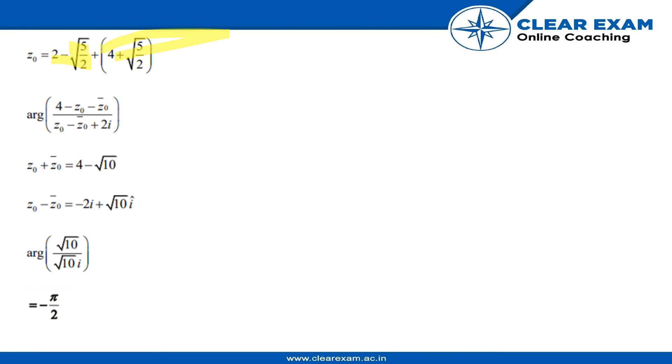z₀ is equal to (2 - √5/2) + i(√5/2 - 1). What they have asked is the argument of (4 - z₀ - z̄₀)/(z₀ - z̄₀ + 2i). So z₀ + z̄₀ = 4 - √10, and z₀ - z̄₀ = -2i + √10i.